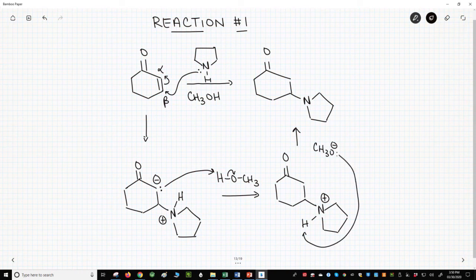Finally, deprotonate the ammonium ion with the resulting methoxide from the previous step. Amines are great Michael donors.